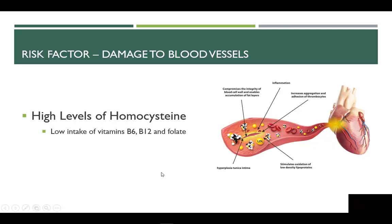Yet another risk factor that damages blood vessels is high levels of homocysteine. Vitamins B6, B12, and folate are coenzymes necessary to break down homocysteine so that it won't damage blood vessels. Therefore, low dietary intakes of vitamins B6, B12, and folate can lead to high homocysteine, which damages blood vessels, stimulating that immune response.